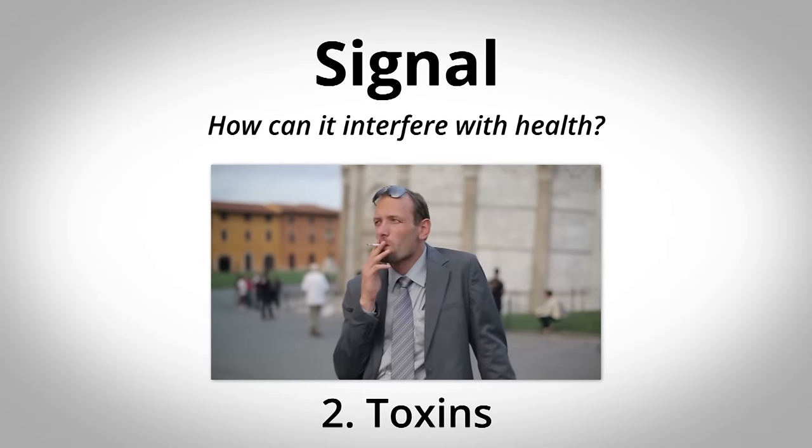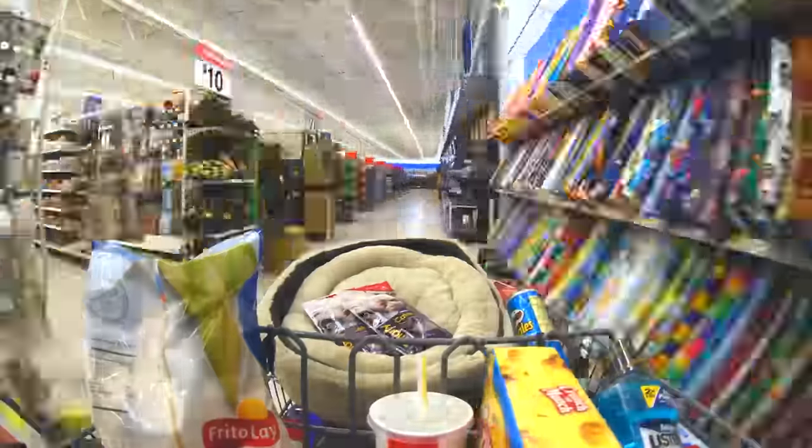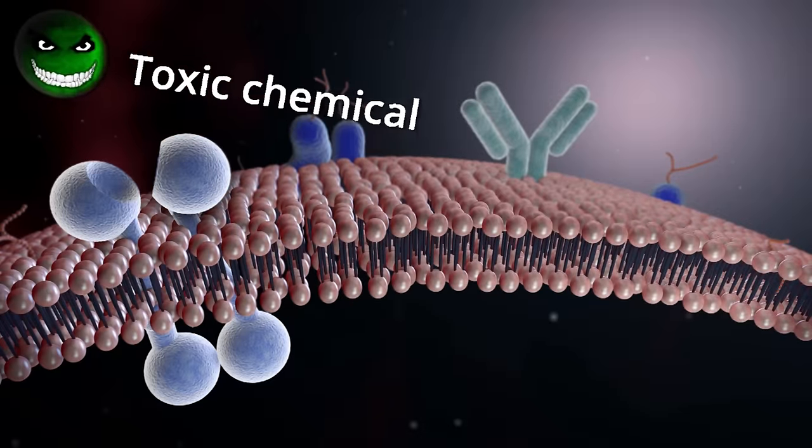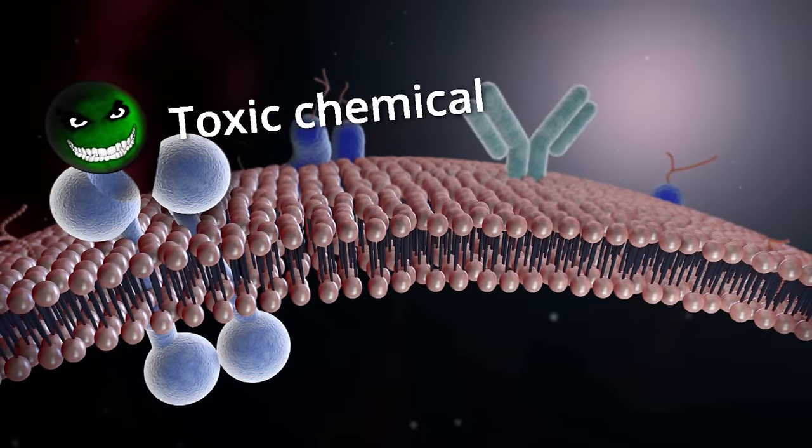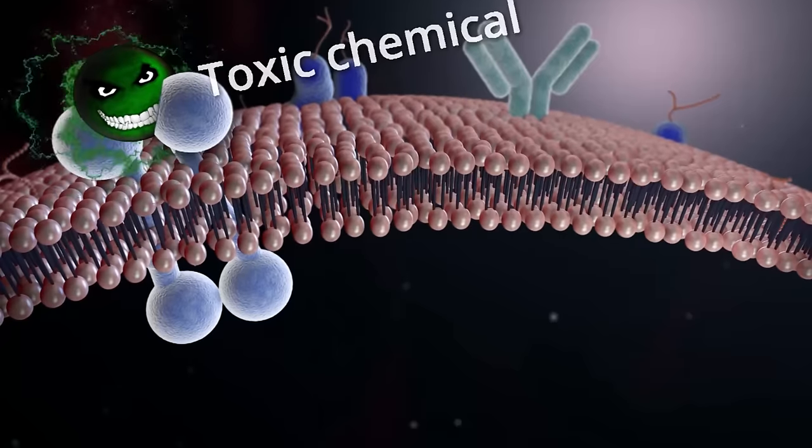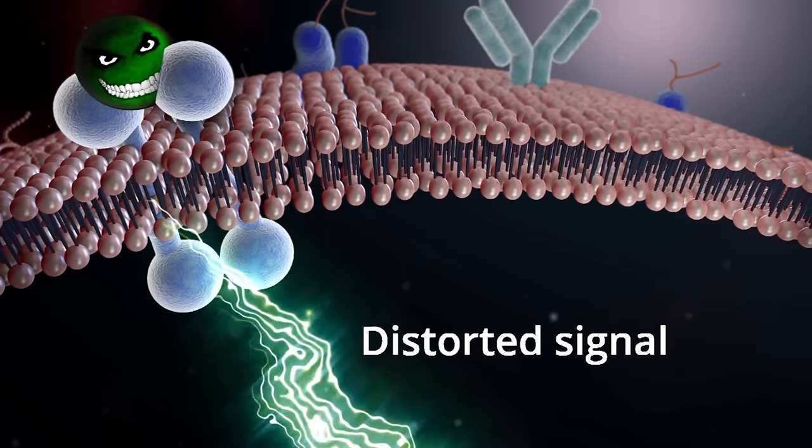Number two, if we put toxic elements into our body, such as the toxins that we acquire by eating industrial farm foods, toxic chemicals can engage in the signal pathway. But if they do, they don't promote a normal signal propagation. Toxic chemistry can distort the signal.